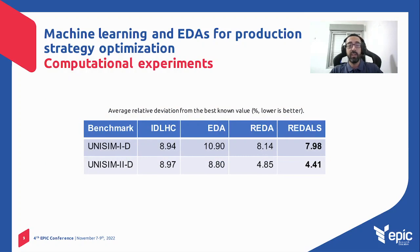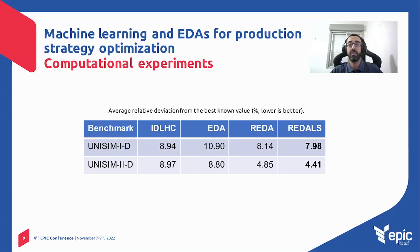Here are the results, shown as average relative deviation in percentage — so lower is better. In both UNISIM-1D and 2D, methods with the regression model yielded better results compared to the base version without the model. R-EDA-LS obtained the best results in both cases. The improvement over EDA was about 3% for UNISIM-1D and 4.4% for UNISIM-2D. As for improvement over IDLHC, it was about 1% for UNISIM-1D and 4.5% for UNISIM-2D.